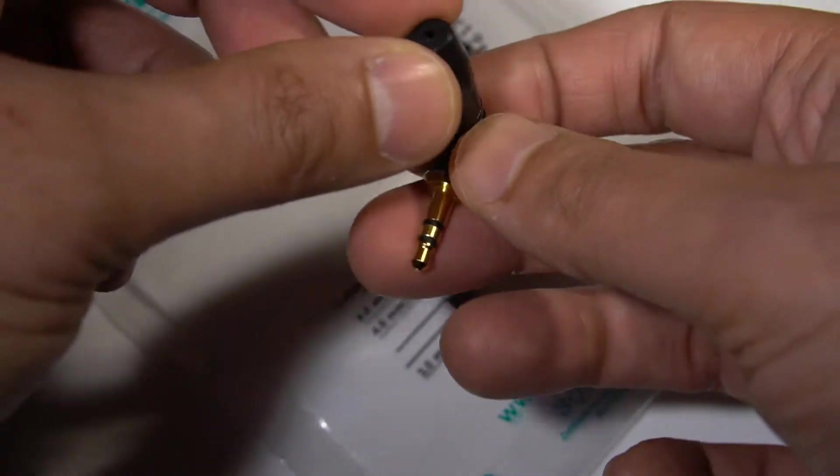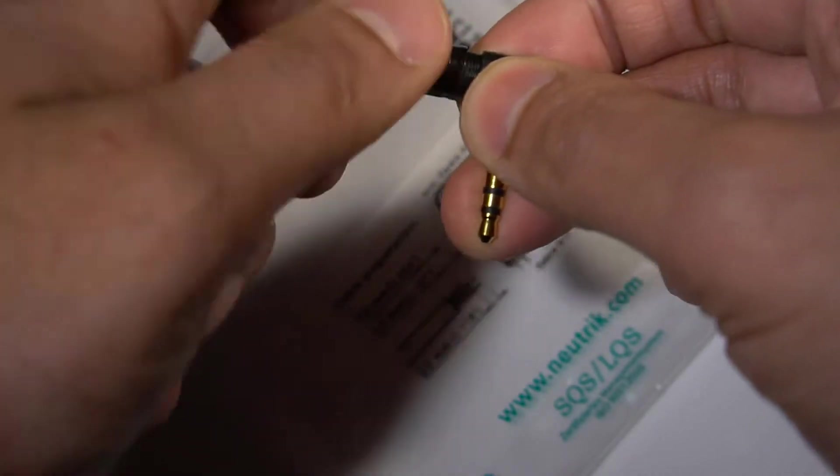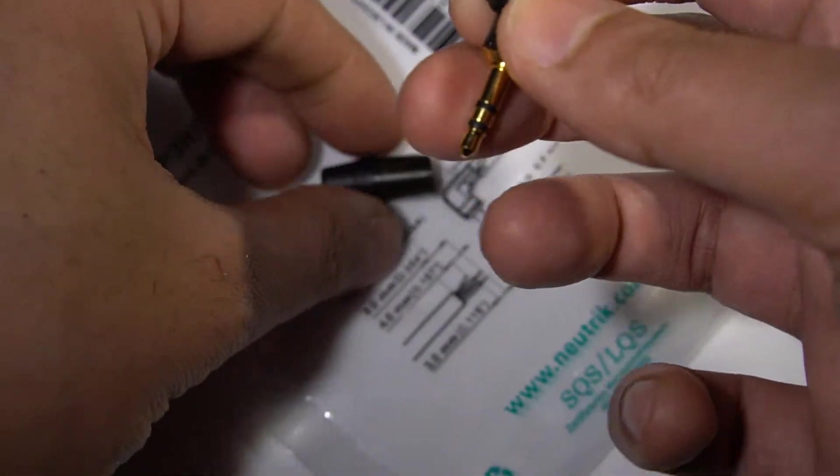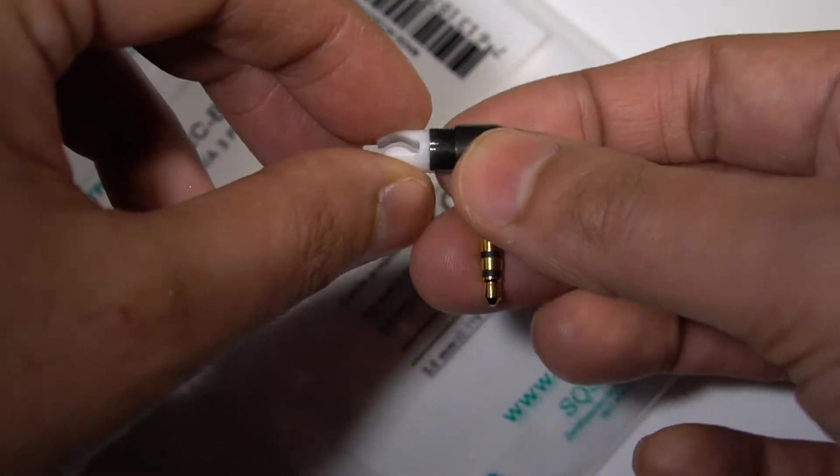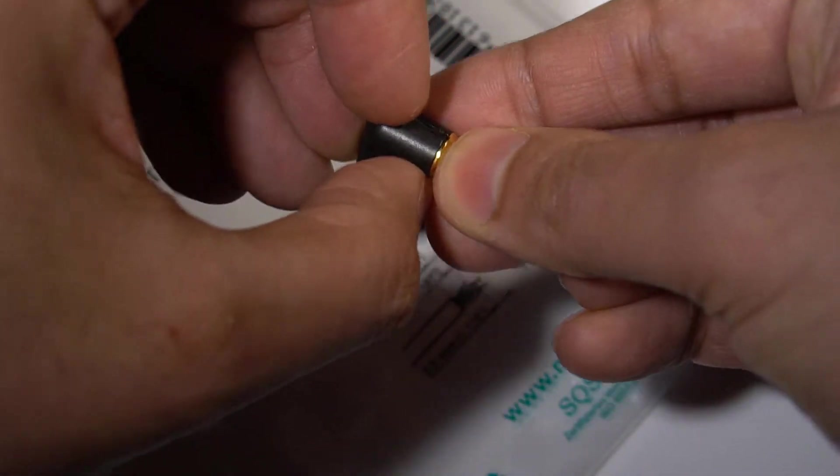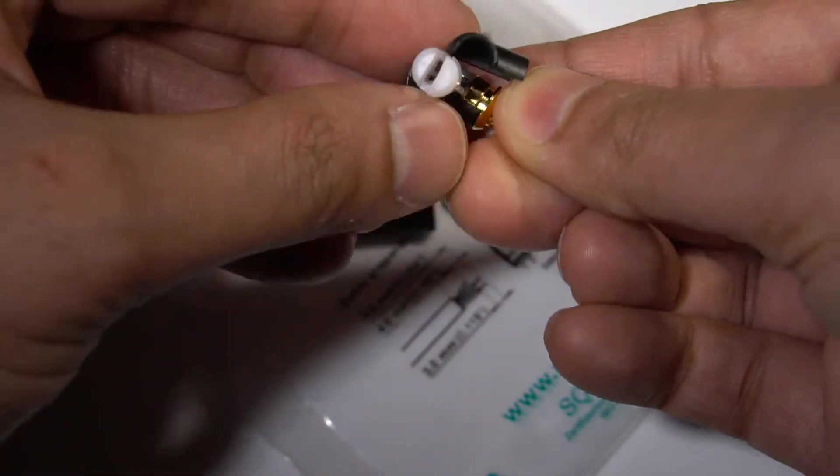This is rubber here for the strain relief, and inside it's really great. It's got this plastic for clamping the insulation, and these two halves come apart like that.